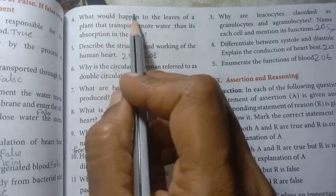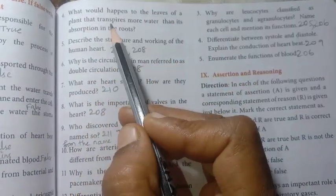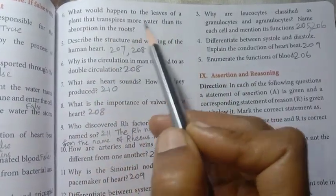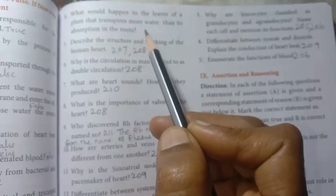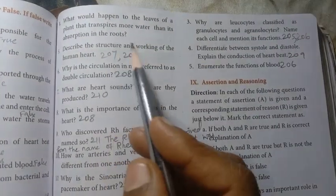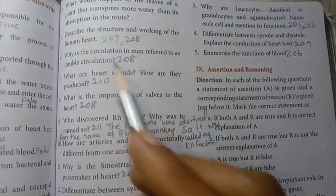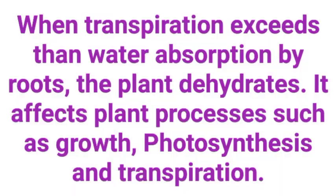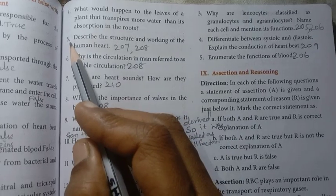Fourth question: what would happen to the leaves of a plant that transpires more water than its absorption in the roots? Answer: when transpiration exceeds water absorption by roots, the plant dehydrates. It affects plant processes such as growth, photosynthesis and transpiration.